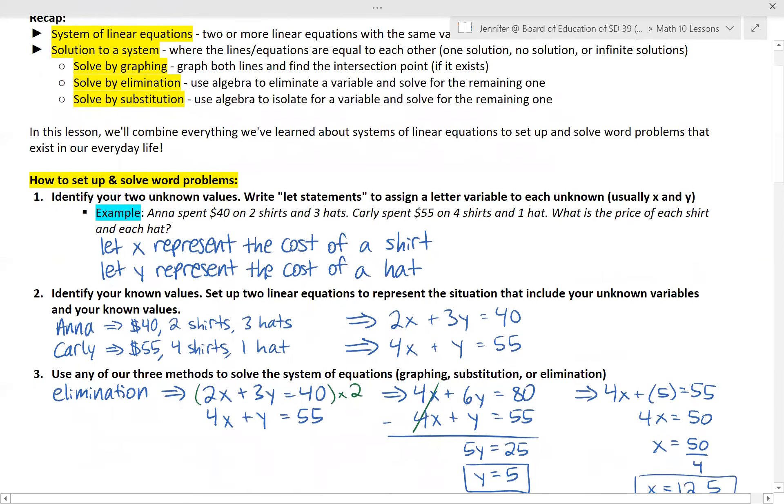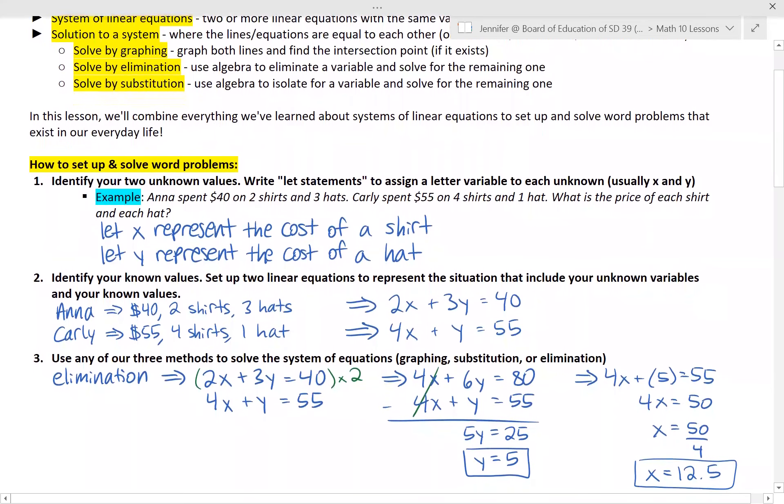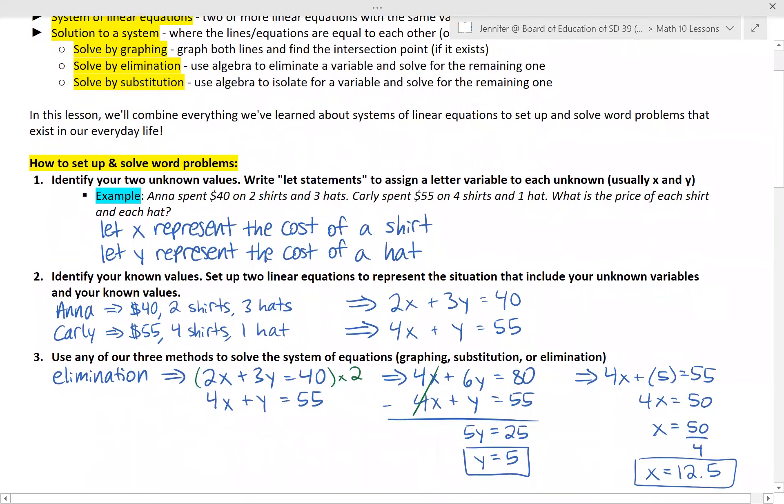Once we have our equations set up we need to just solve using any of the methods that we already know: elimination, substitution, or graphing. I chose to do elimination because it looked pretty easy to set up. So I write my two equations. In this case if I multiply the first equation by two it'll make my x values identical. So that's what I chose to do. I rewrote my equations over here with the first one, everything has been doubled. When I go to do my elimination the four x terms cancel out and I'm left with 5y equals 25. So that means that y is equal to 5.